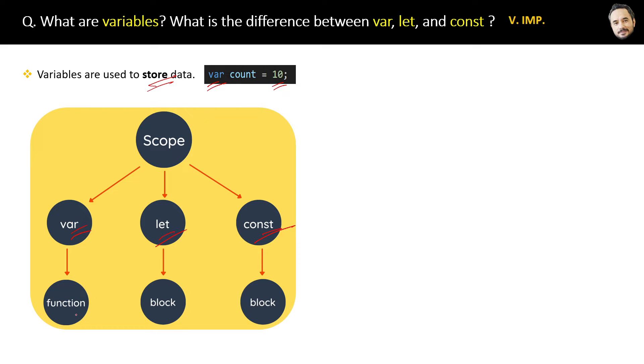Whereas the scope of let and const variables is inside the block only, like an if block, a while loop block, etc. Now let me show you the differences between them with the help of code.